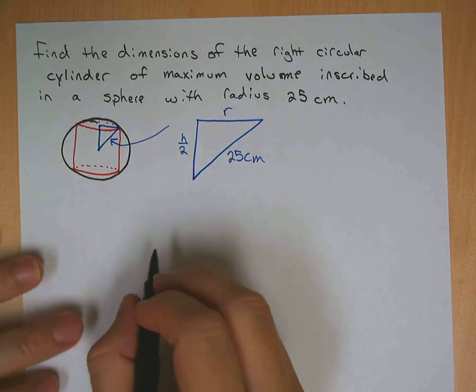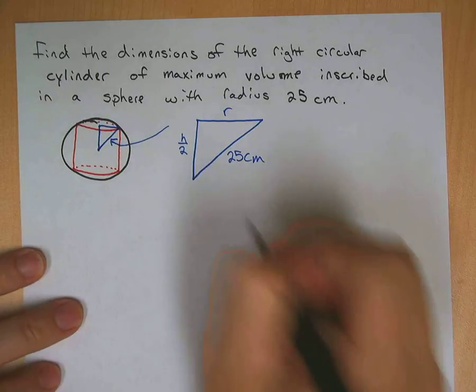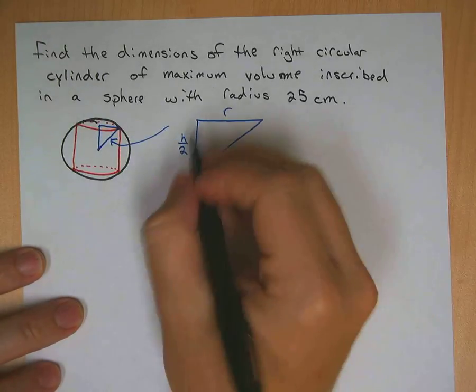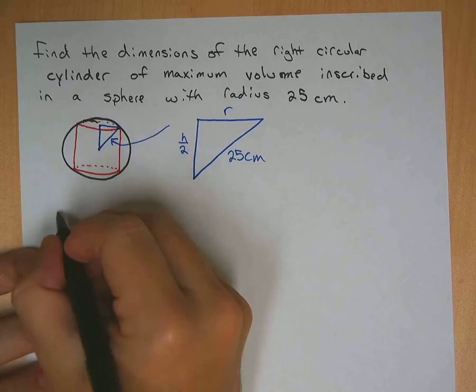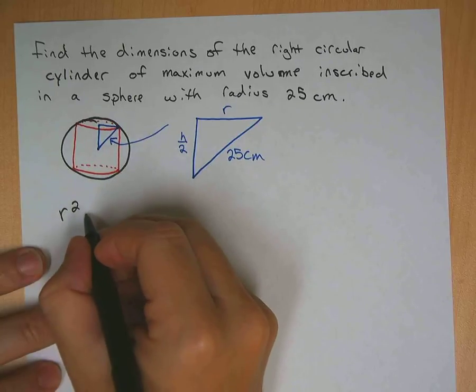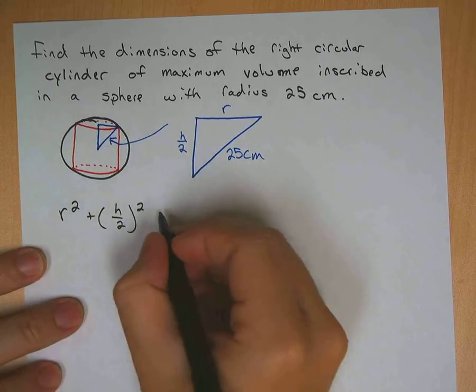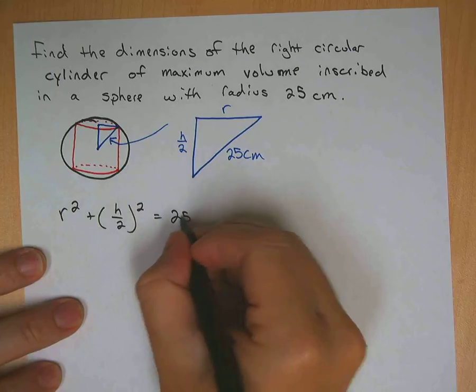So we can set up some relating equations here. First one would be using this triangle that we have here, which is R squared plus H over 2 squared equals 25 squared.